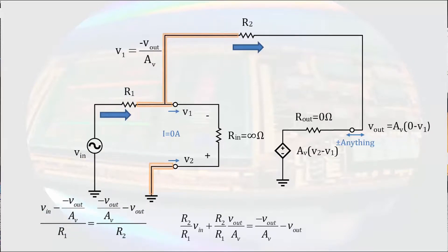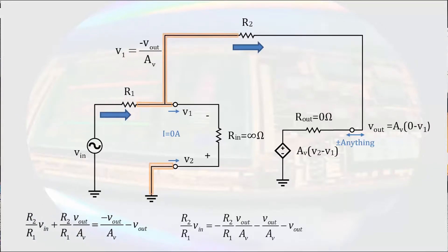We can multiply through this equation by R2 and then gather the terms of Vout on the right side of the equation. Factoring Vout, the equation can be solved for the ratio of Vout to Vin.